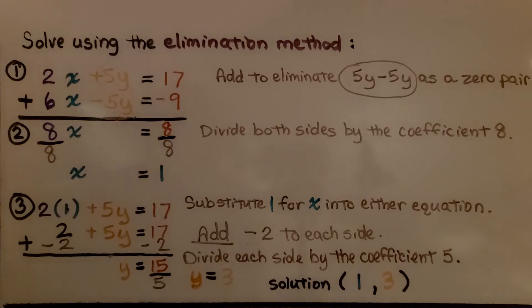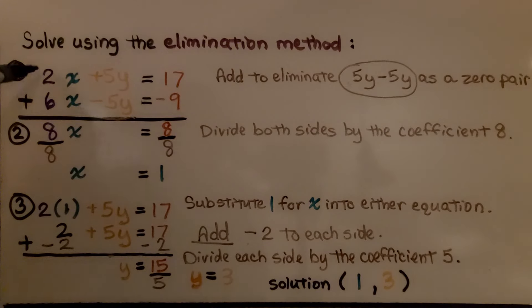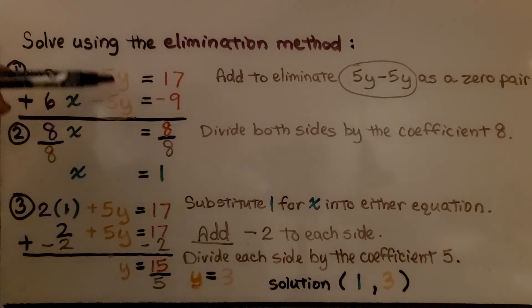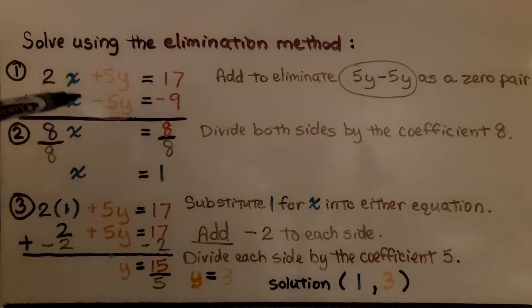Let's try another one. Solve using the elimination method. We have the system: two x plus five y equals 17, and six x minus five y equals negative nine. Our variable terms are stacked nicely on top of each other. First, we're going to add to eliminate the positive five y and negative five y.